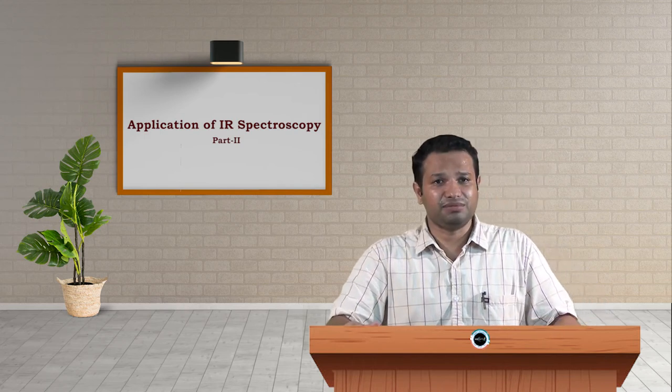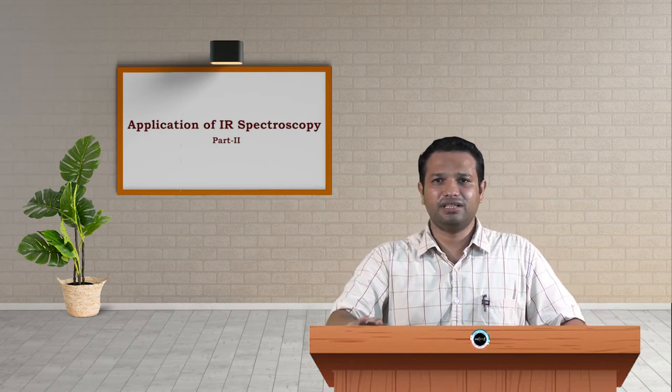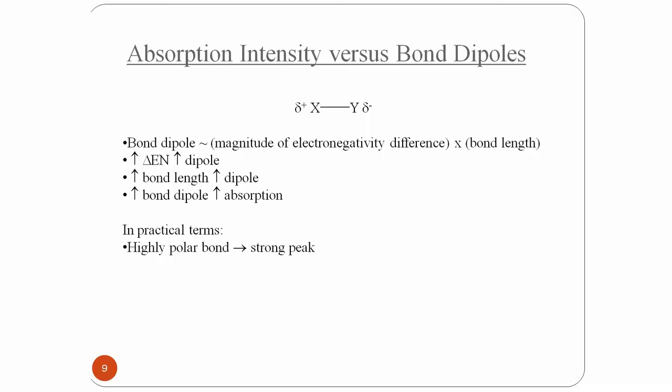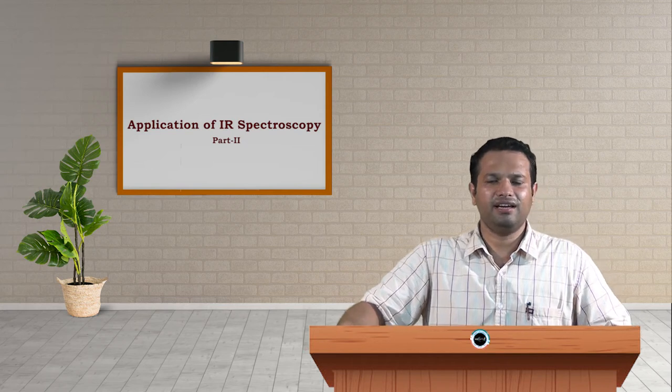In practical terms, the more polar the bond is, the stronger the peak we get. If it is less polar, then we do not get any peak, or we get a small weak peak, or it can be completely absent. Only molecules which have dipole moments will show IR peaks. Otherwise, if they do not have any dipole, then the peaks are absent or very weak in nature.